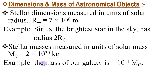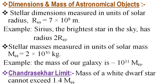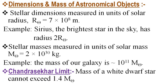For example, the mass of our galaxy is about 10¹¹ M☉. In this context, S. Chandrasekhar — that means Subramanian Chandrasekhar — showed that the mass of a white dwarf star cannot exceed 1.4 M☉. This is called the Chandrasekhar limit.